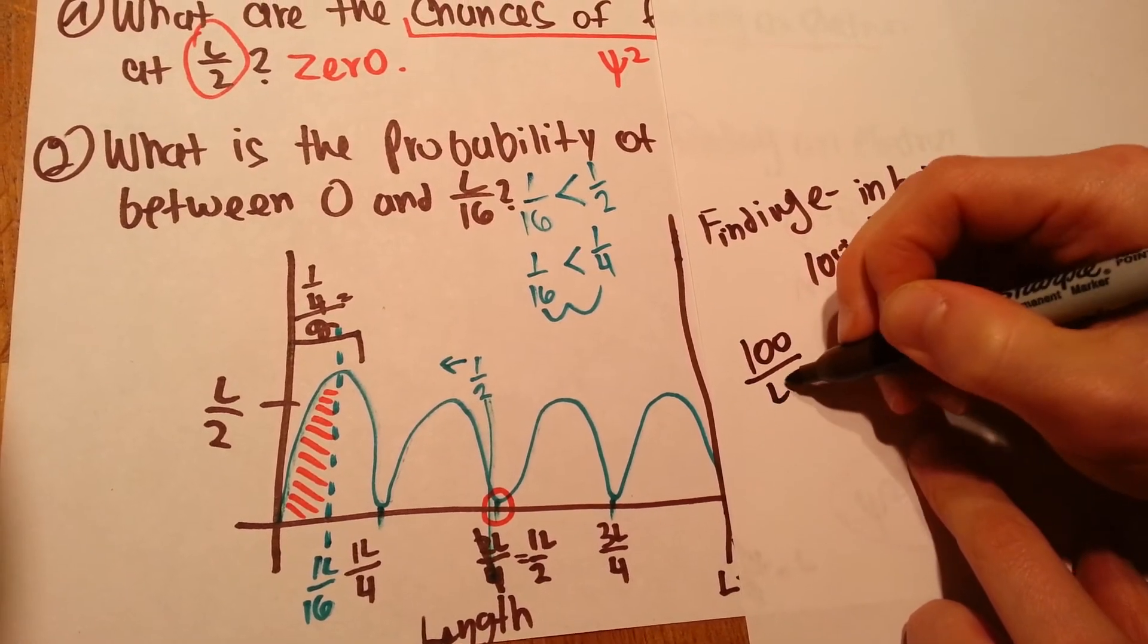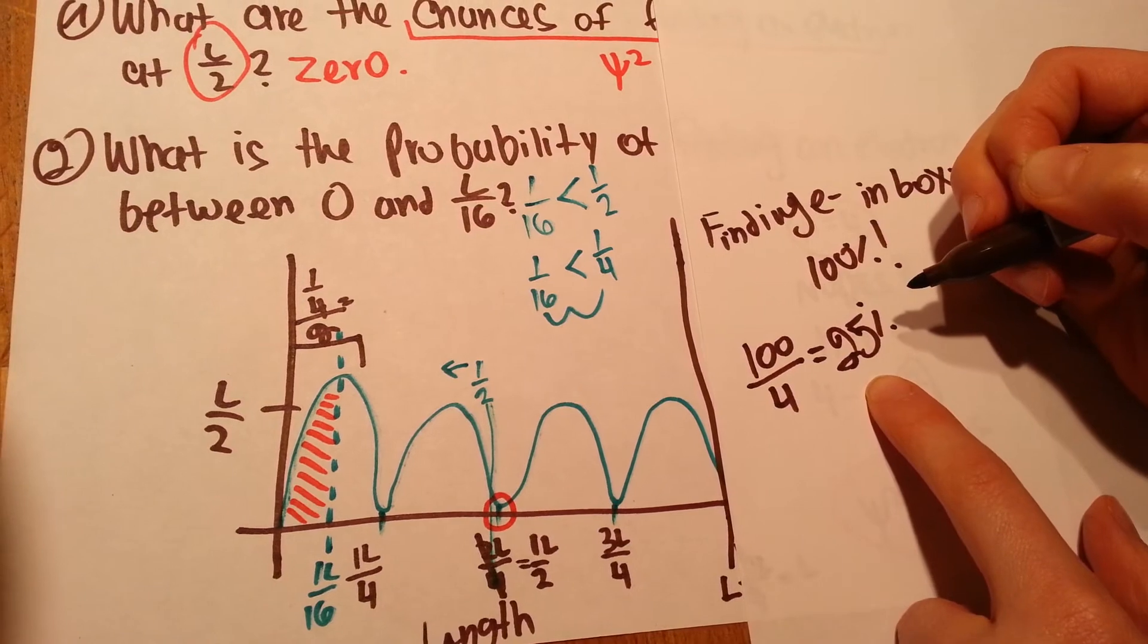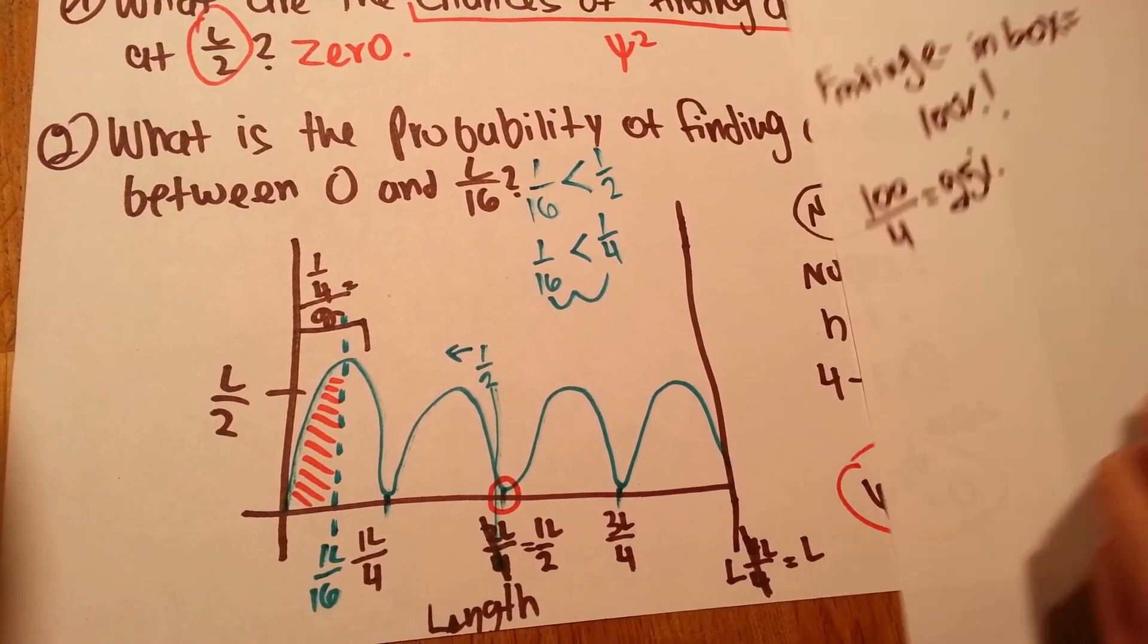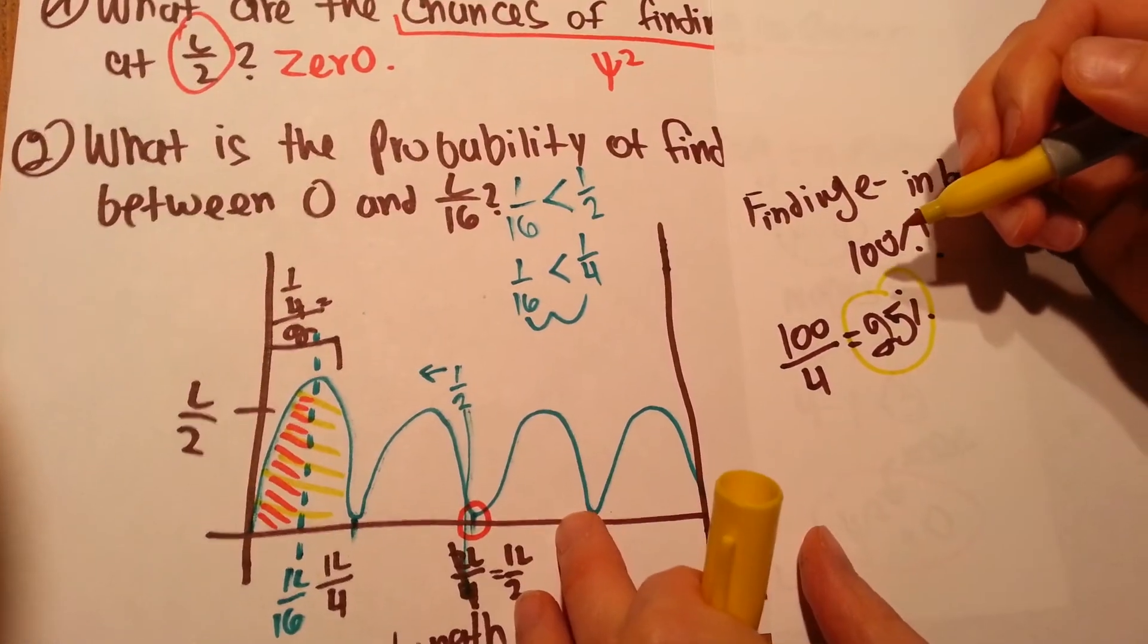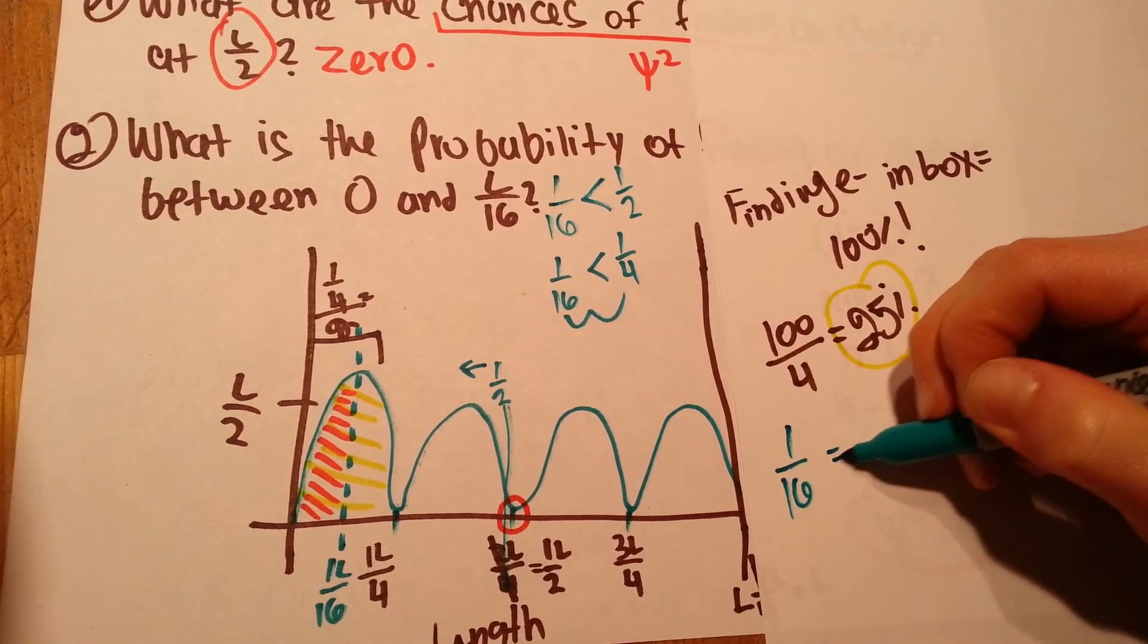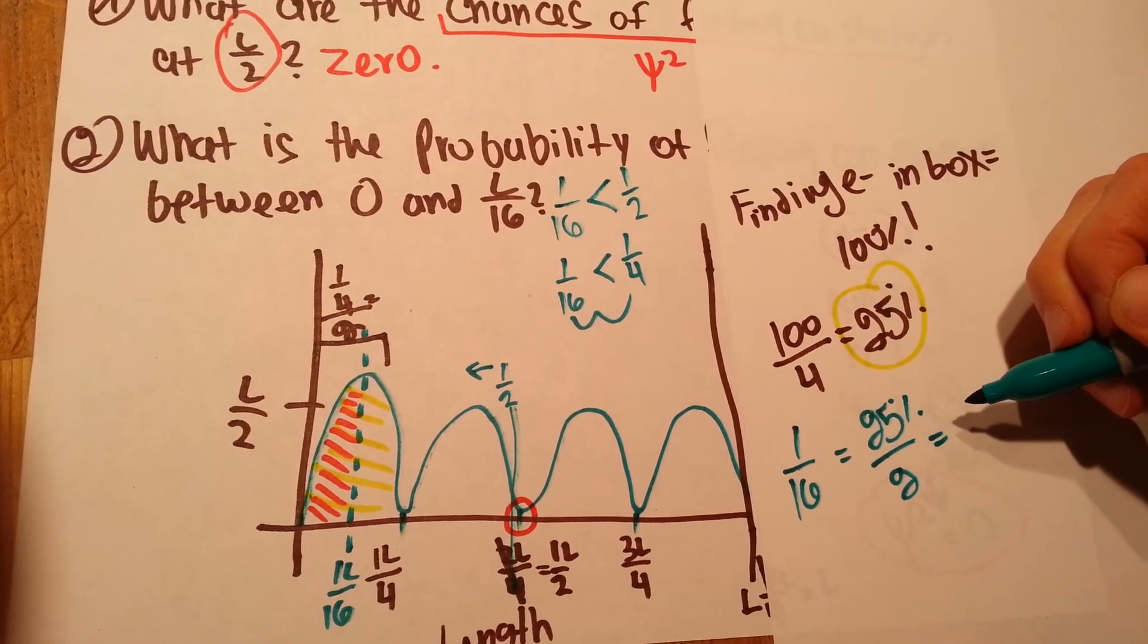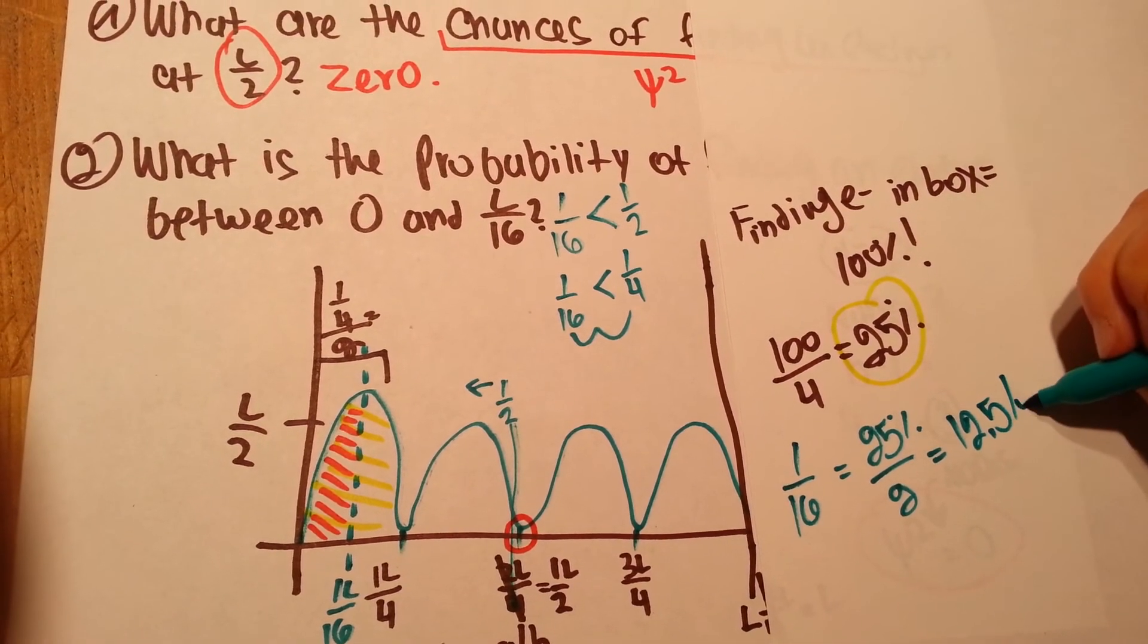So, 100 divided by 4 equals 25%. So, the chances of finding the electron here in this whole region, let's mark it with yellow, 25%. So, the chances of finding the electron at 1 over 16 would be 25% divided by 2, which is going to be 12.5%.